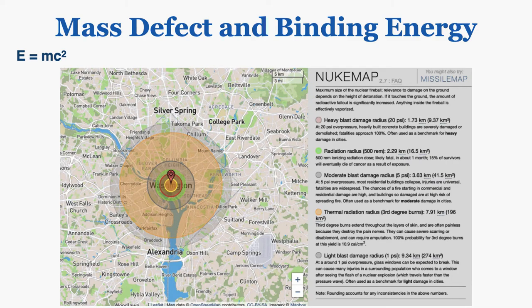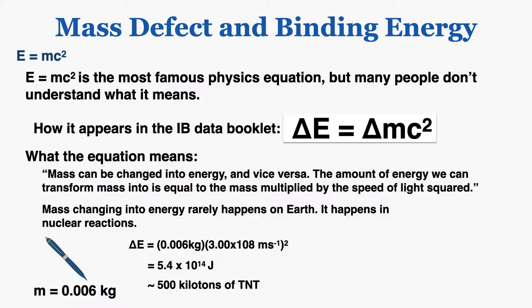I've left a link to the NukeMap website in the description of this video. So E equals mc squared tells you that you can transform mass into energy, and there is a huge amount of energy contained within mass — though it's very difficult to actually change mass into energy.